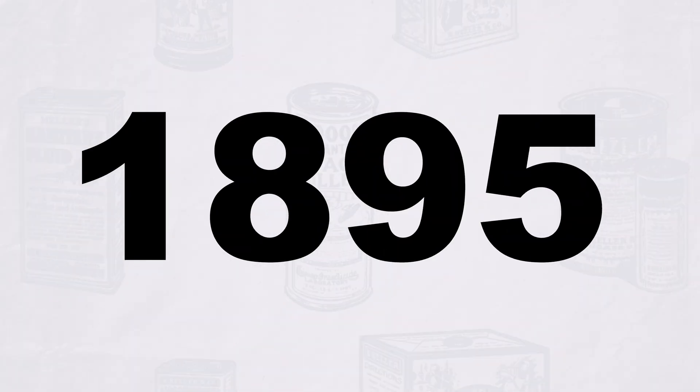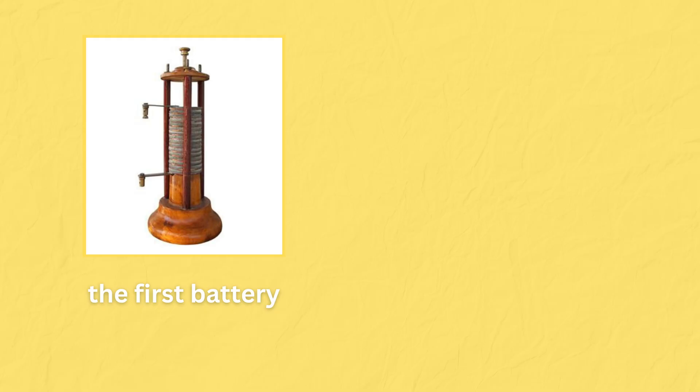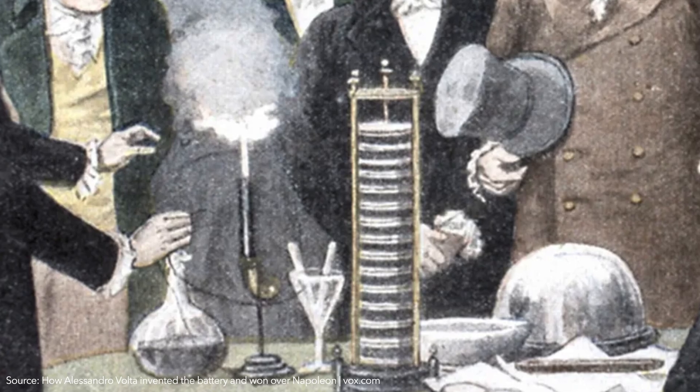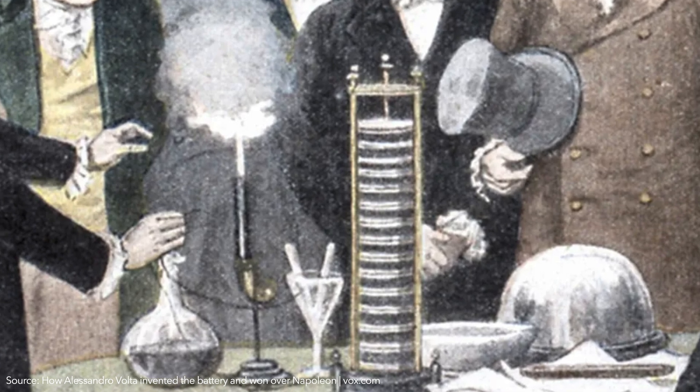We're going to take it all the way back to the year 1837. At this point, the first battery had already been invented, which allows scientists to manually produce electricity for the first time.